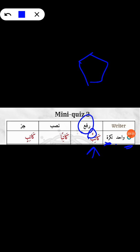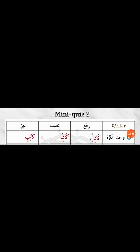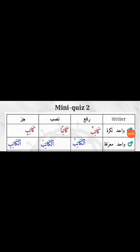Now make its nasab form — it becomes katibin with double fatha. Notice the post-tanwin alif as well. Next we have the jar form: kathibin, which we work out from the two kasras. So you practice with masculine vahid nakra: rafa is kathibun, nasab is kathibin, jar is kathibin.